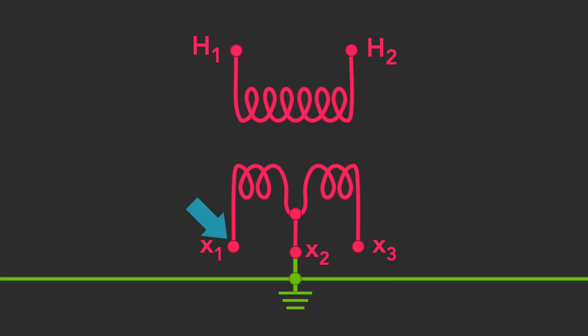Each winding connection, X1 to X2 and X3 to X2, provides 120 volts. A connection between X1 and X3 will yield 240 volts.